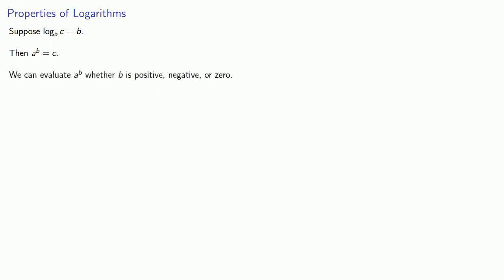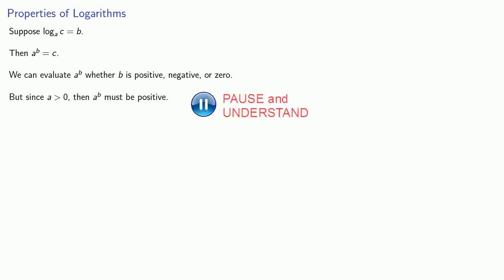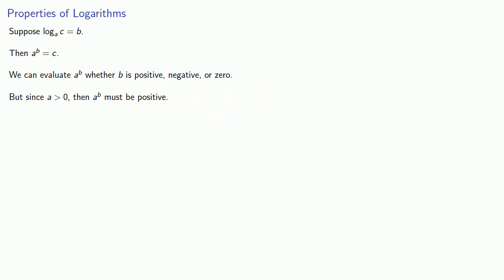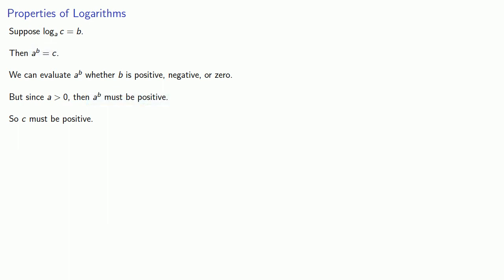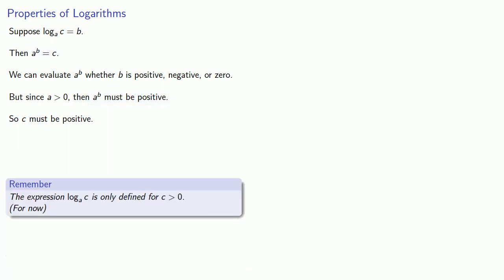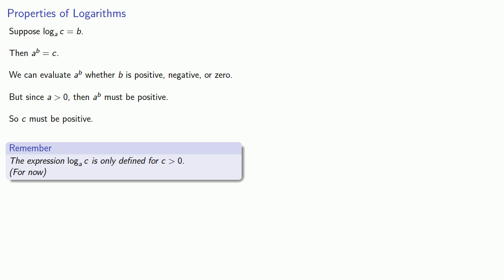We can evaluate a to power b whether or not b is positive, negative, or zero. But since a must be greater than zero, then a to power b must be positive. And remember, equals means replaceable. If a to power b must be positive, then c must be positive. So the expression log base a of c is only defined if c is positive — at least for now.